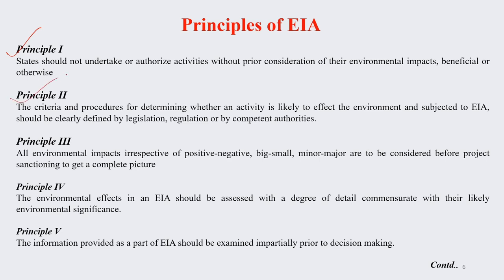Principle number 2: the criteria and procedures for determining whether an activity is going to affect the environment, as seen through EIA, should be clearly defined by legislation and regulation by competent authorities. Principle number 3: all environmental impacts — irrespective of positive or negative, big or small, minor or major — have to be considered before project sanctioning to get a complete picture.